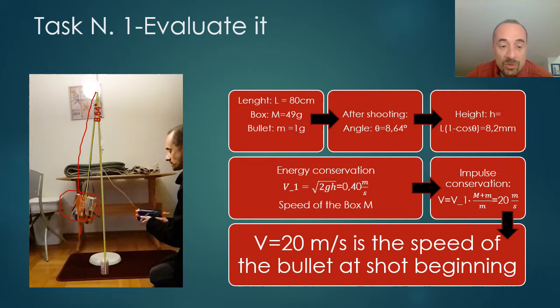And this height is giving the velocity thanks to the energy conservation law. The velocity of the mass of the pendulum is square root of 2 times gravity factor times elevation h. With the above numbers, we get 0.40 meters per second. And thanks to the conservation of the impulse, the velocity of the bullet being shot is given by the velocity of the pendulum times the ratio of the masses of the pendulum plus the bullet and the bullet, actually 50 times. So 20 meters per second is the speed of the bullet being shot.